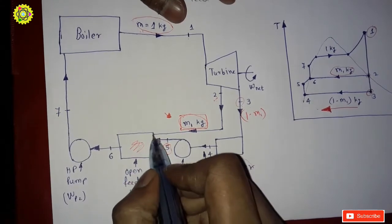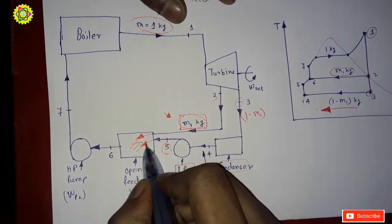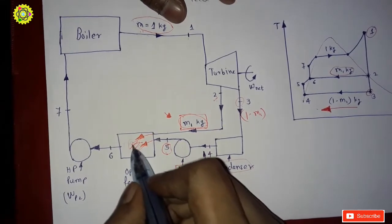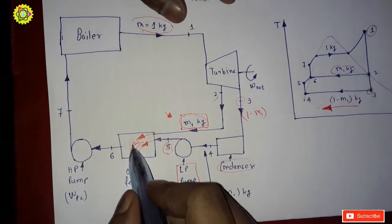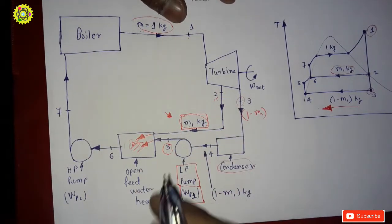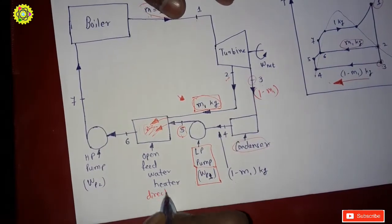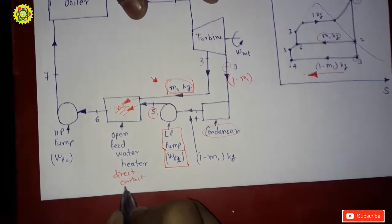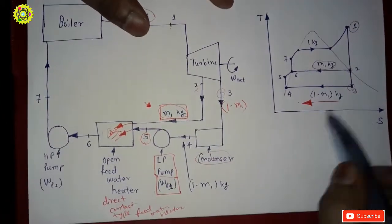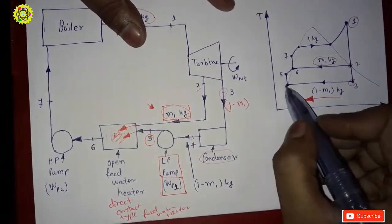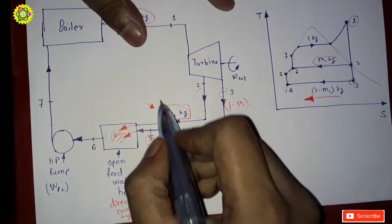In the open feed water heater, direct mixing of the extracted steam and the condensate takes place. Because it uses a direct mixing process, it is called an open or direct-contact type feed water heater. In the T-S diagram, the path from State 4 to State 5 represents the LP pump increasing the pressure up to that of the extracted steam.